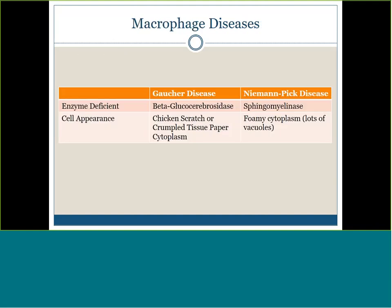Two macrophage diseases: Gaucher and Niemann-Pick. Each is missing an enzyme. In Gaucher, they're missing beta-glucocerebrosidase — remember the G's: Gaucher, glucose, cerebrosidase. The macrophage cytoplasm will have a chicken-scratch or crumpled tissue paper appearance. Niemann-Pick is missing sphingomyelinase, leading to lipid buildup giving a foamy or vacuolated cytoplasm appearance. A memory aid: 'you pick your sphincter' — sphincter resembles sphingomyelinase.